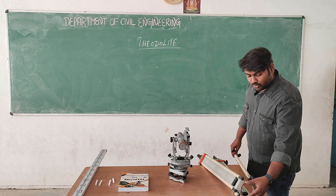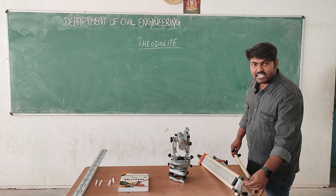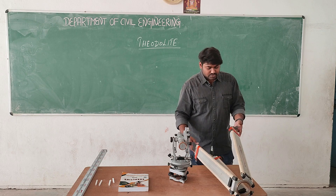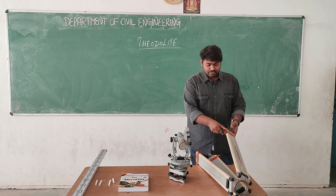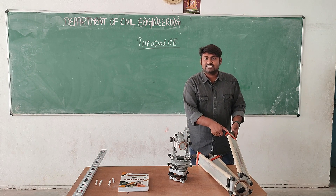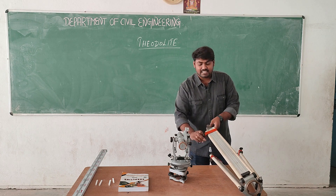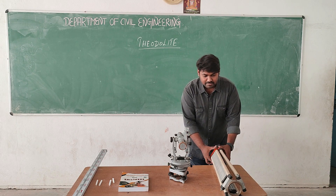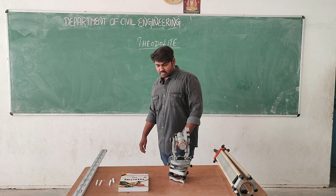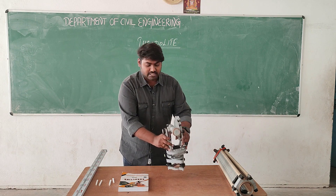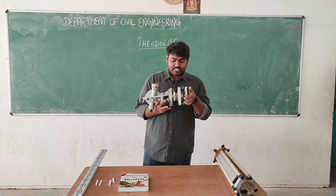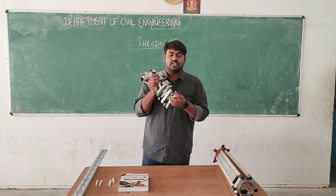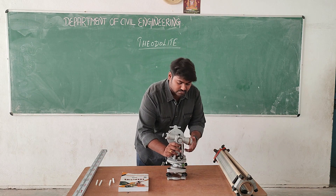This is the top portion of the head, where we hold the theodolite. The tripod has three legs with sharp edges, and each leg has foot screws. We can adjust the foot screws to easily adjust the instrument. That is the main purpose — to hold the instrument. Next, this is the theodolite instrument, which has three foot screws. With the help of these foot screws only, we can adjust the instrument.